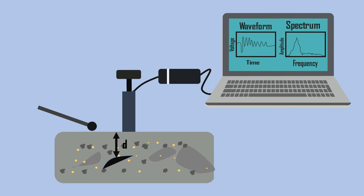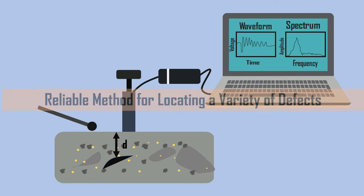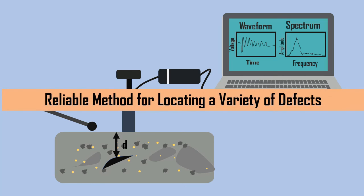The impact echo method proves to be a reliable method for locating a variety of defects in concrete structures.